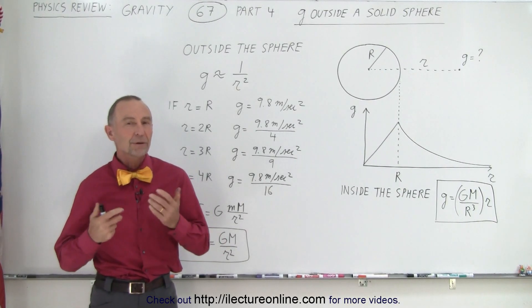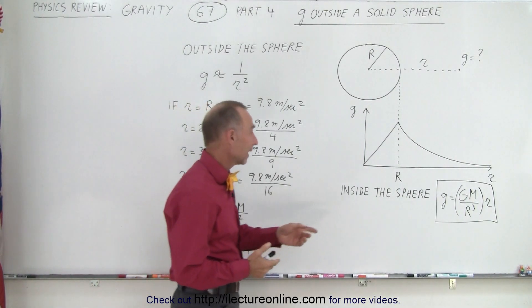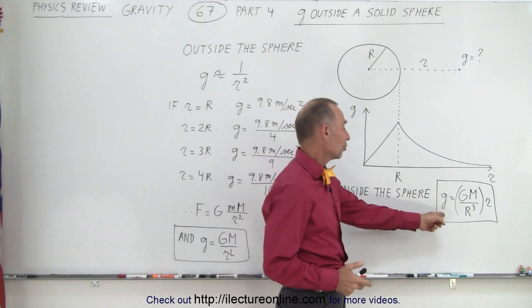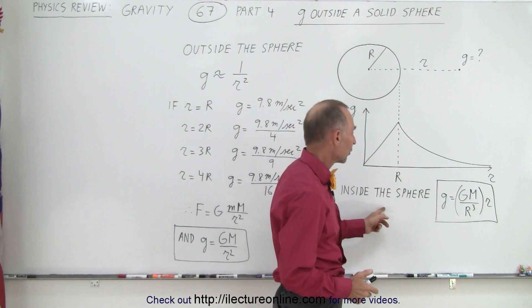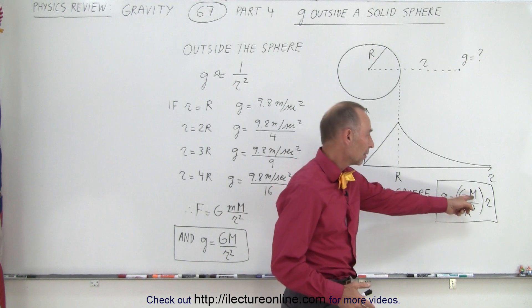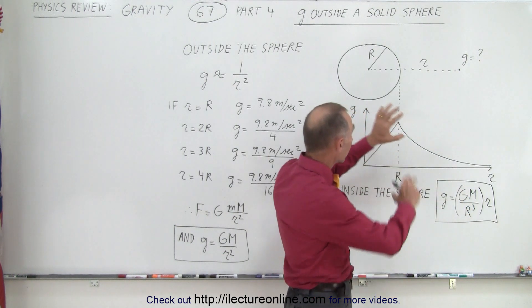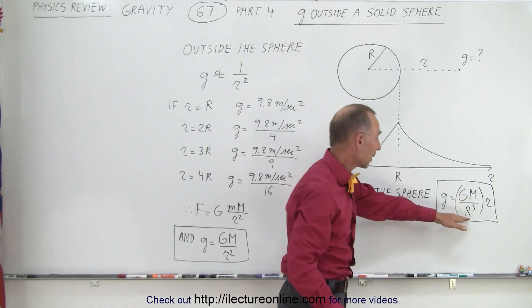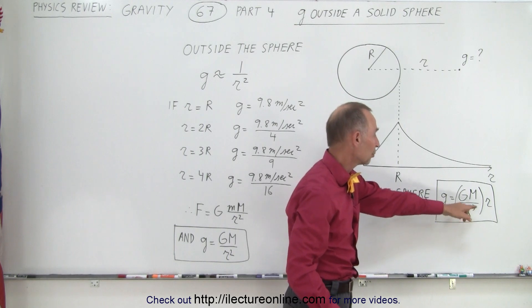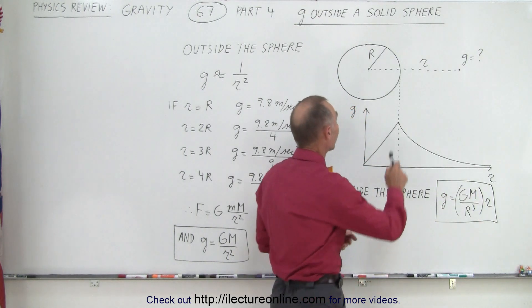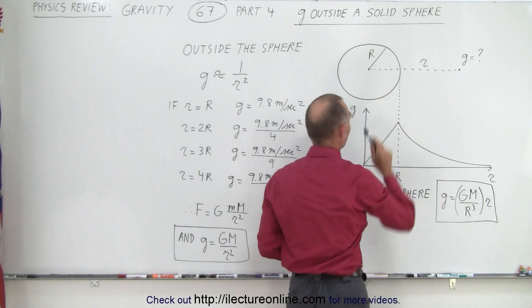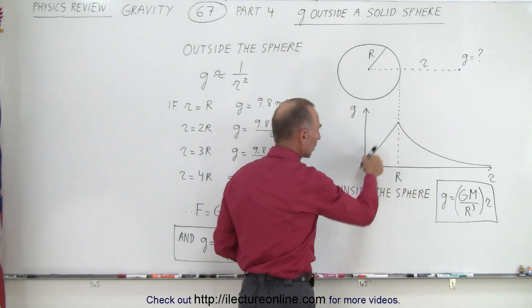Welcome to our lecture online. In the previous video we determined that the acceleration due to gravity inside the sphere is equal to g, the mass of the object, the big object like the Earth, divided by the radius of the object cubed times the distance from the center to the surface. And so we end up with that linear relationship.